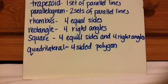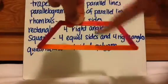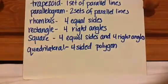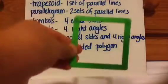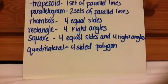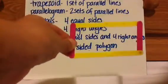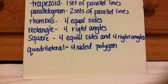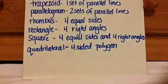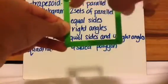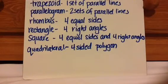Let's go through our definitions. Trapezoid: one set of parallel lines — an example would be this one, where these are parallel but these are not; they're going to eventually cross. Parallelogram: two sets of parallel lines — these would never touch and these would never touch. Rhombus: four equal sides. Rectangle: four right angles — I could use this or this; they both have four right angles. A square is four equal sides and four right angles — so this would be considered a square because all four sides are the same and there are four right angles. And all of these that I showed you are quadrilaterals because they all have four sides.